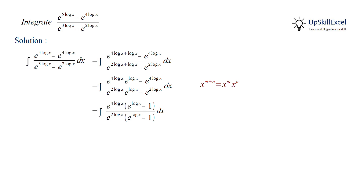The factor e raised to log x minus 1 is common in both numerator and denominator, so it gets cancelled out. For the remaining terms, we apply properties of exponents again, giving us e raised to 2 log x. Since 2 is a constant outside the logarithm, we can take it inside as a power, giving us e raised to log of x squared.